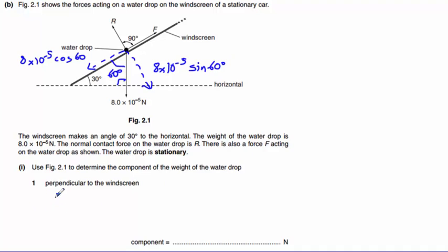So our perpendicular component is 8 times 10 to the minus 5 times sine 60 which is 6.93 times 10 to the minus 5 Newtons.